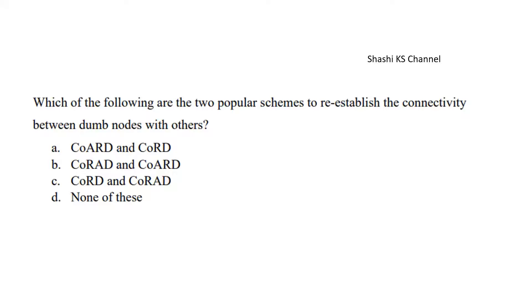Next question is which of the following are the two popular schemes systems to re-establish the connectivity between dumb nodes with others. The right answer to this is option C, Cod and Corad.